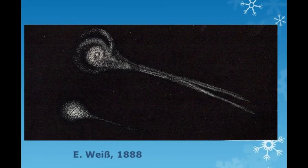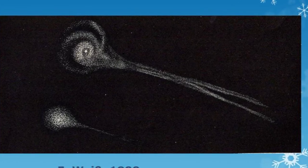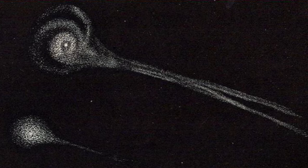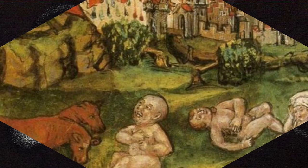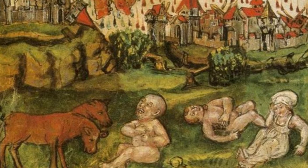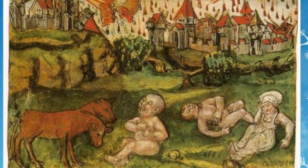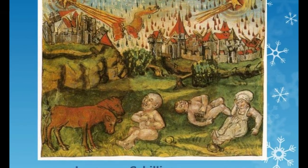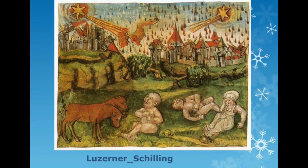A comet also broke into two pieces. This comet, called Biela, did not return as anticipated. Instead, it provided a great shower of meteors.